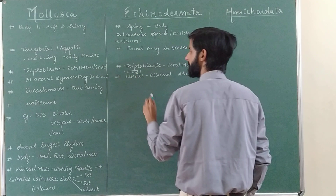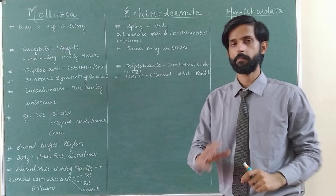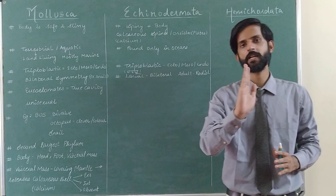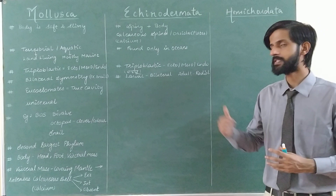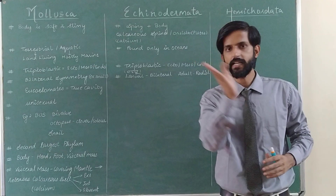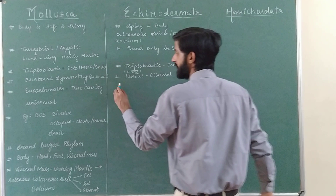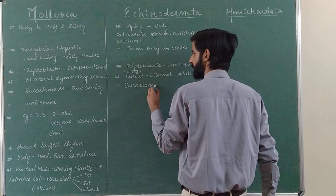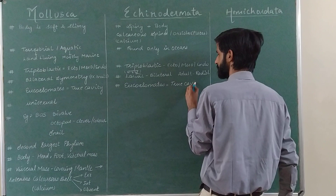In the larval stage the body can be cut in half through only one line passing through the center. When it grows into the adult stage it shows radial symmetry — the commonest example is starfish, where you can cut along different radii through the center and always get equal halves. For body cavity, these are also eucoelomates, showing presence of a true cavity.